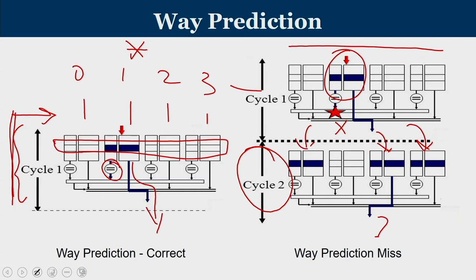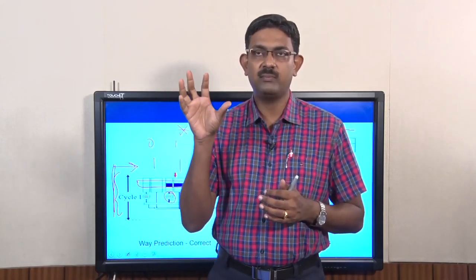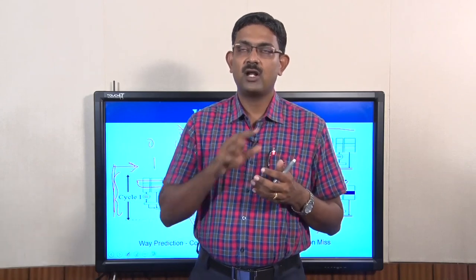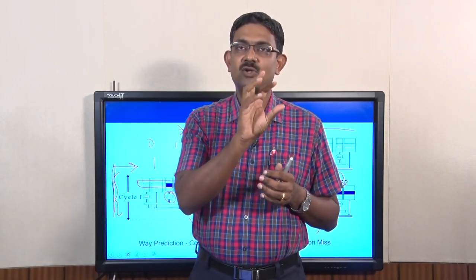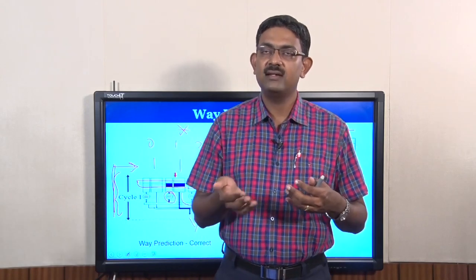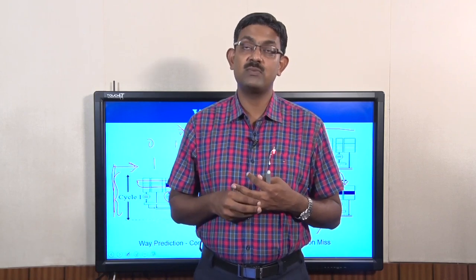Way prediction helps especially when working inside a loop. Think of a loop traversing 10 different sets — in all those sets there are certain blocks or cache lines that are used. In each set, a specific way is accessed: way 0 of set 1, way 3 of set 2, way 2 of set 3, and so on. The same pattern repeats as the loop runs for multiple iterations. Using extra bits we record the most recently used way in the last iteration and use that to predict what will be accessed in the next iteration.